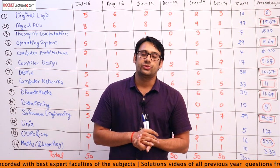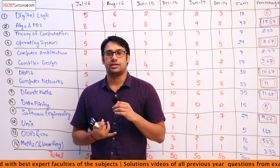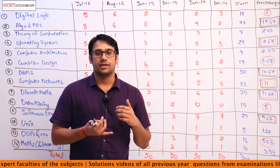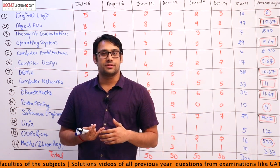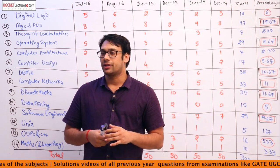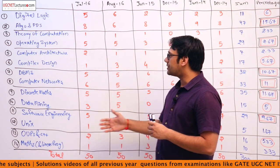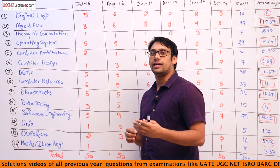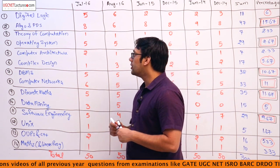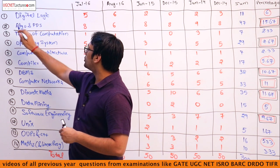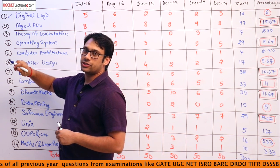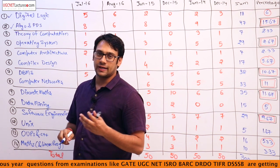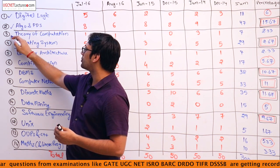For the NET examination, students who have done a master's degree are eligible — either M.Tech, M.C.A., or M.Sc. in computer science, IT, or related fields. Here you can see the subjects coming in the UGC-NET examination. Let me mark out the subjects which are also in GATE: digital logic, algorithms and programming, data structures, theory of computation, operating system, and computer architecture are in both GATE and UGC-NET.